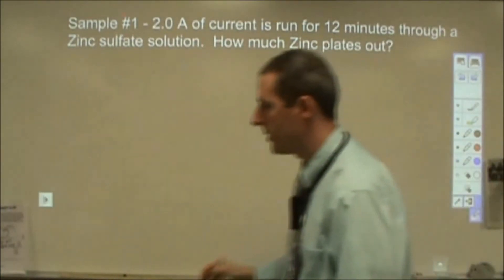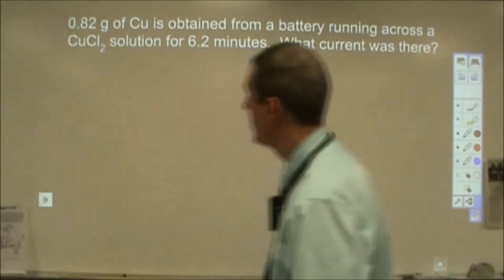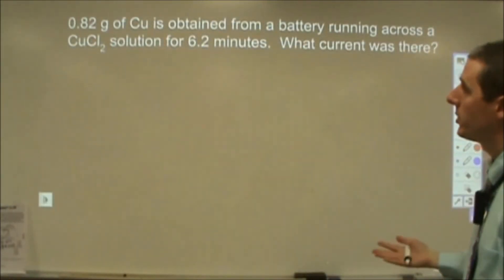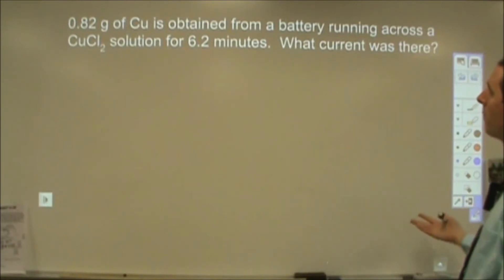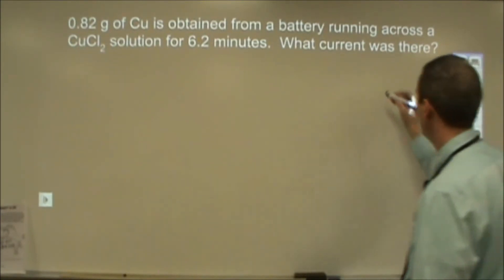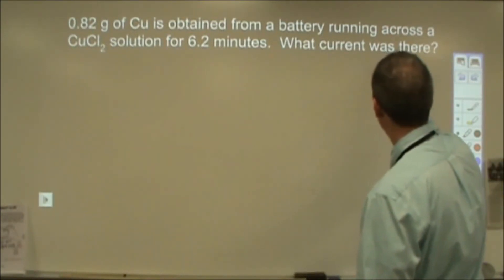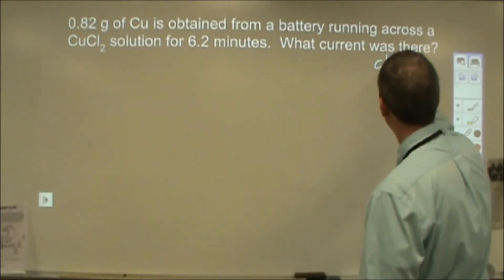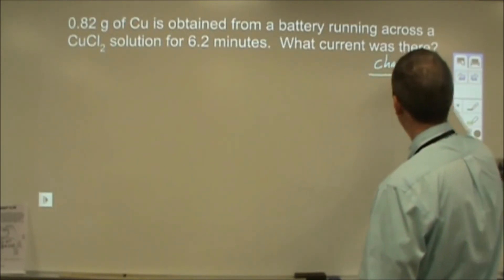Now a different type of problem that you could see is this. So it says here we get the final answer. 0.82 grams of copper is obtained from a battery running across copper chloride solution for 6.2 minutes. What current was there? So for this, what we're going to do is we're going to start by the fact that current, our amps, is how much charge compared to our time.